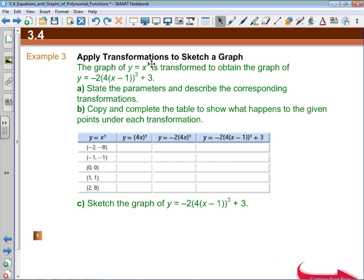So it tells us that Y equals X cubed is transformed to get Y equals negative 2 times in a bracket, 4 times X minus 1 cubed, and then finally plus 3. So now it wants us to state the parameters. And I would just like to identify that this function right here is negative 2 times a function evaluated at 4 times X minus 1 plus 3 if F of X is equal to X cubed. I want to reemphasize that this is chapter 1 all over again.